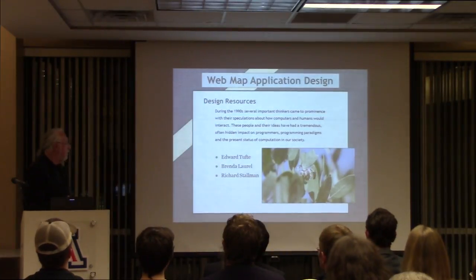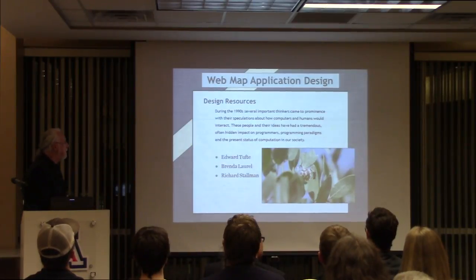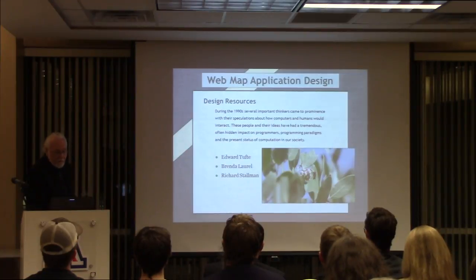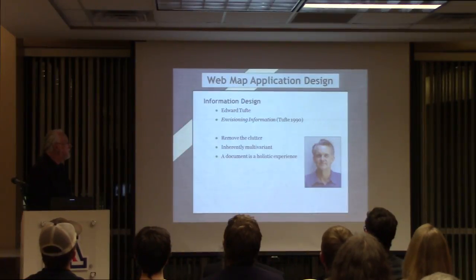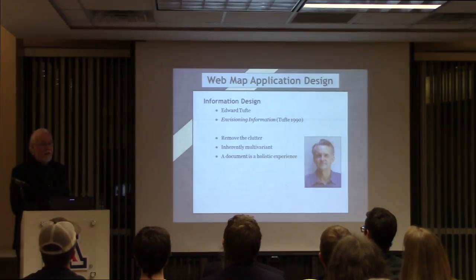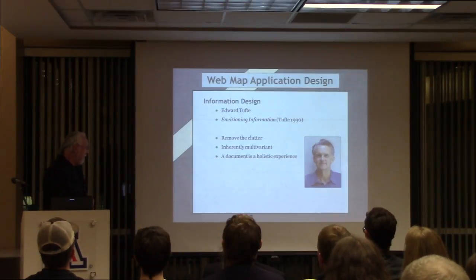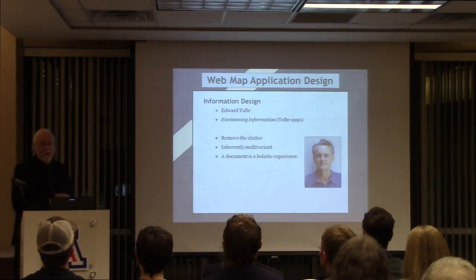Now I'm going to talk about design resources I'm going to use. During the 1990s, several important thinkers came into prominence with their speculations about how computers and humans would interact. These people have had a tremendous, often hidden, impact on programmers and the present status of computation. The three I'll talk about are Edward Tufte, Brenda Laurel, and Richard Stallman. Edward Tufte of Yale University wrote Envisioning Information, among others. A couple of key ideas: remove the clutter — this is information design. Information is inherently multivariate, and a document is a holistic experience: it's not just the map, it's what the map does and what you get out of it.